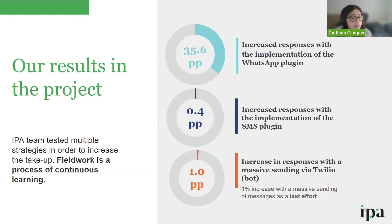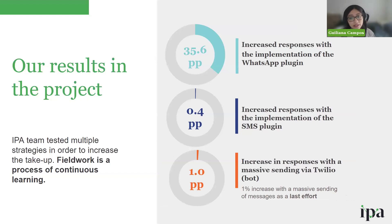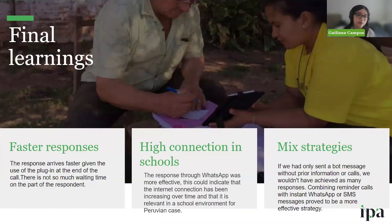What are the results? IPA team tested multiple strategies to increase take-up. Fieldwork is a process of continuous learning. We increased responses by 35 percentage points with the implementation of the WhatsApp plugin, and by 0.4 percentage points with the use of SMS. As a last effort, we sent a massive mailing via Twilio bot, and saw an increase of one percentage point.